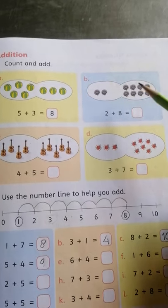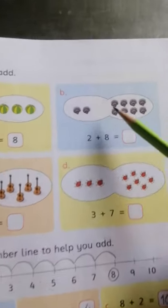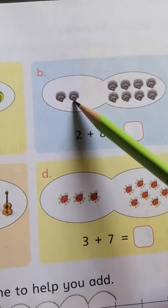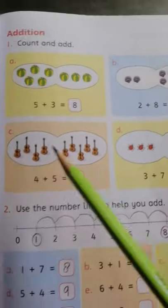In part B you can see here are few pearls. 2 pearls are here and 8 pearls are here. Now count the whole pearls. These are 1, 2, 3, 4, 5, 6, 7, 8, 9, 10. So total 10 pearls are here.